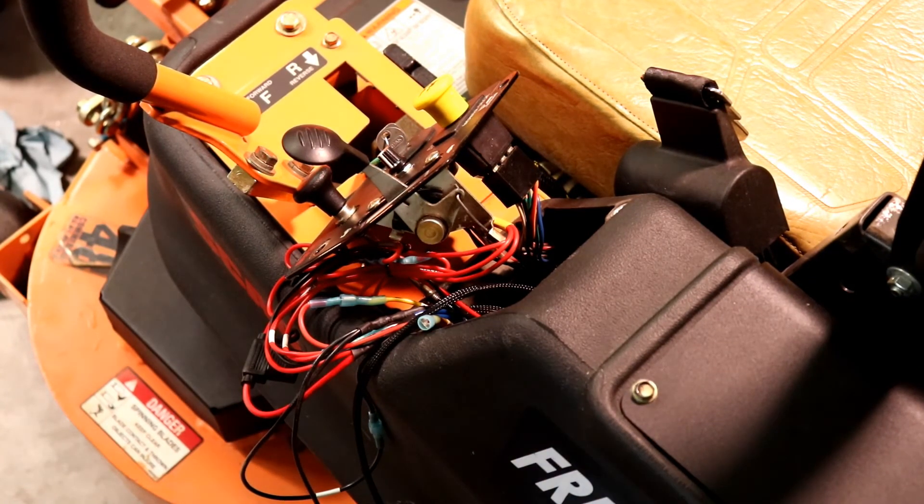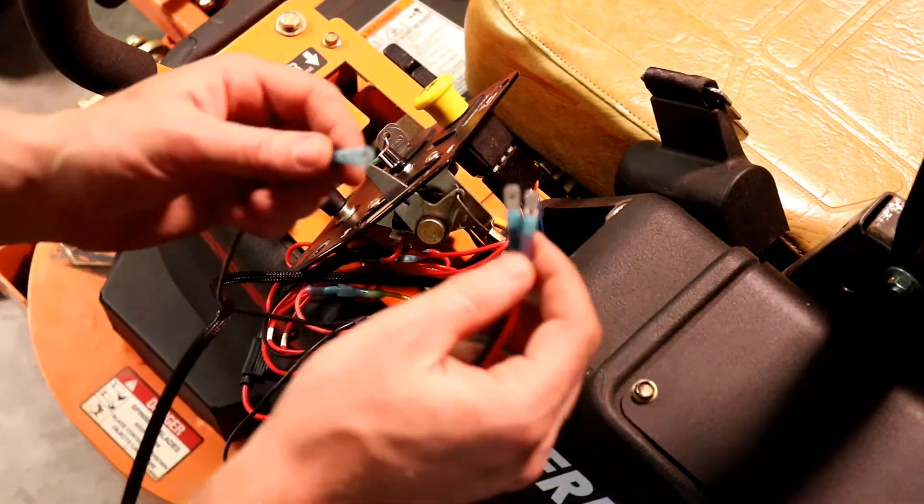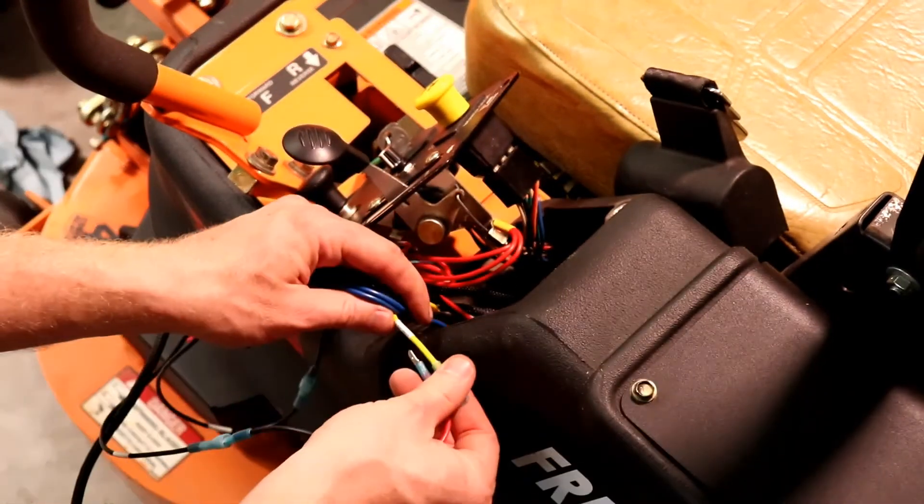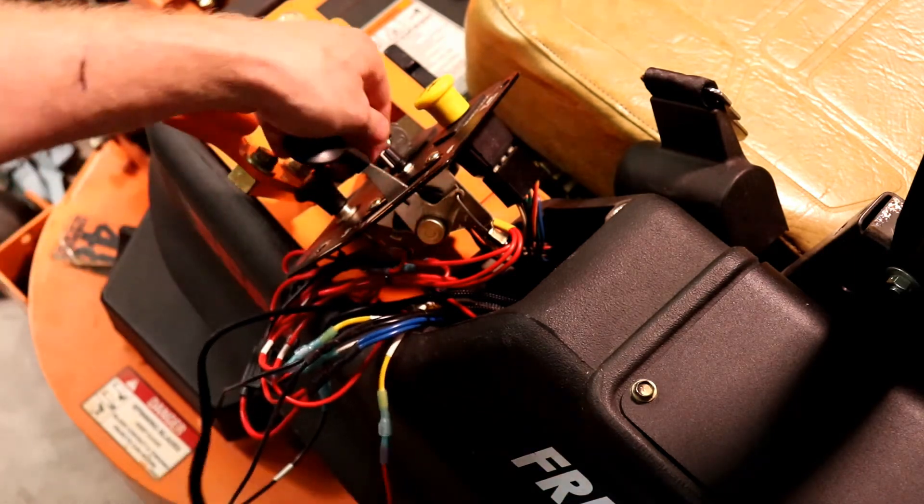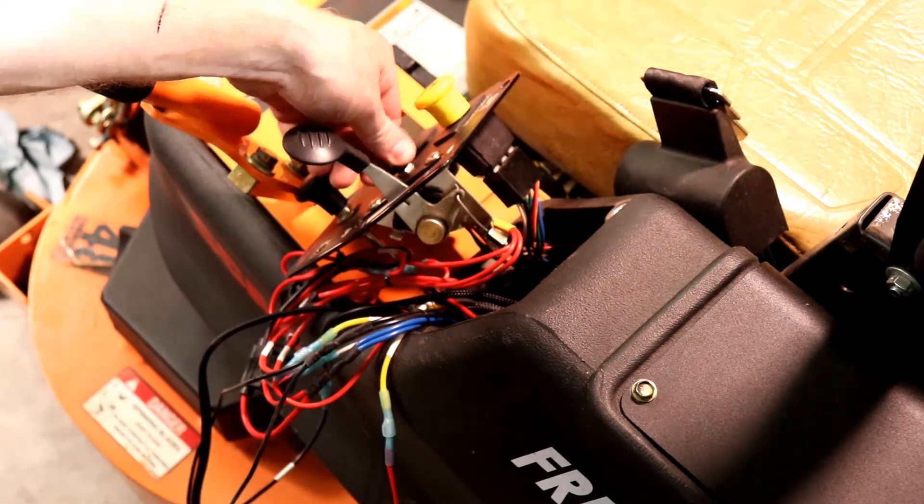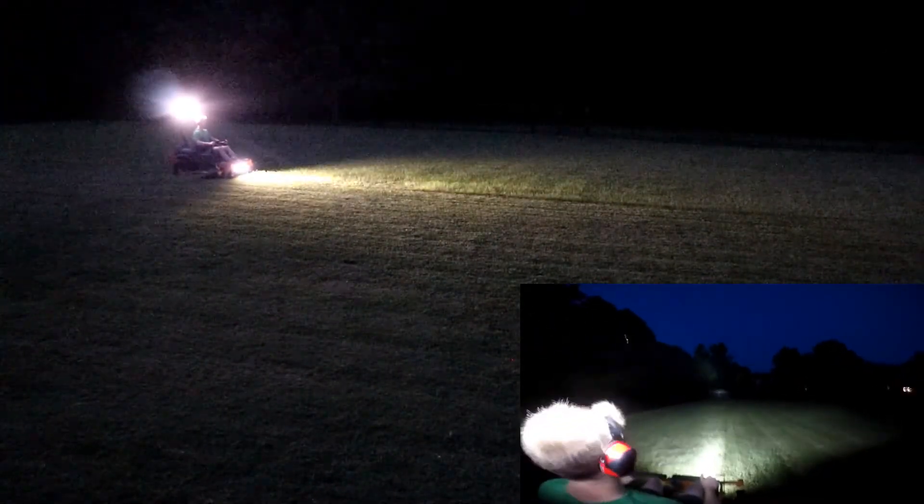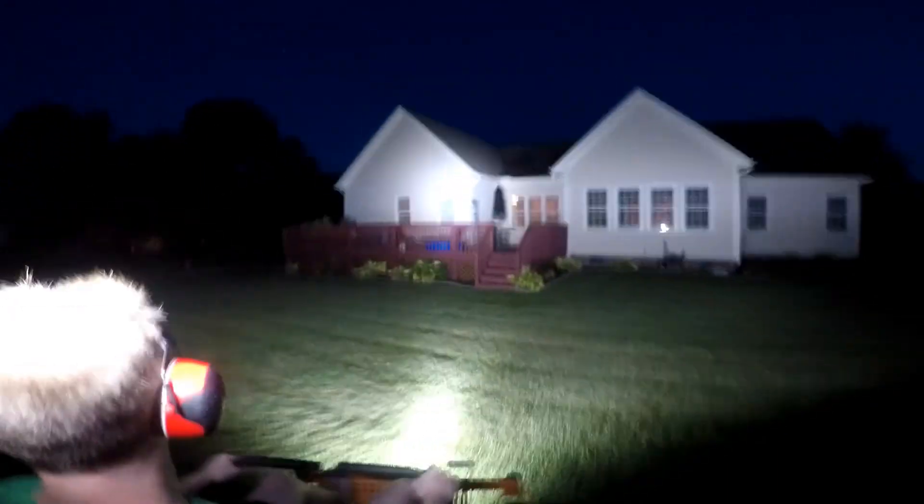Alright, one last connection to make for the lower lights and then we can put a wrap on this project. So on the return, it goes to the negative one and then there should be, there we go. That is lower LED plus. Let's check it. Boom. Perfect. Alright. So here we go.